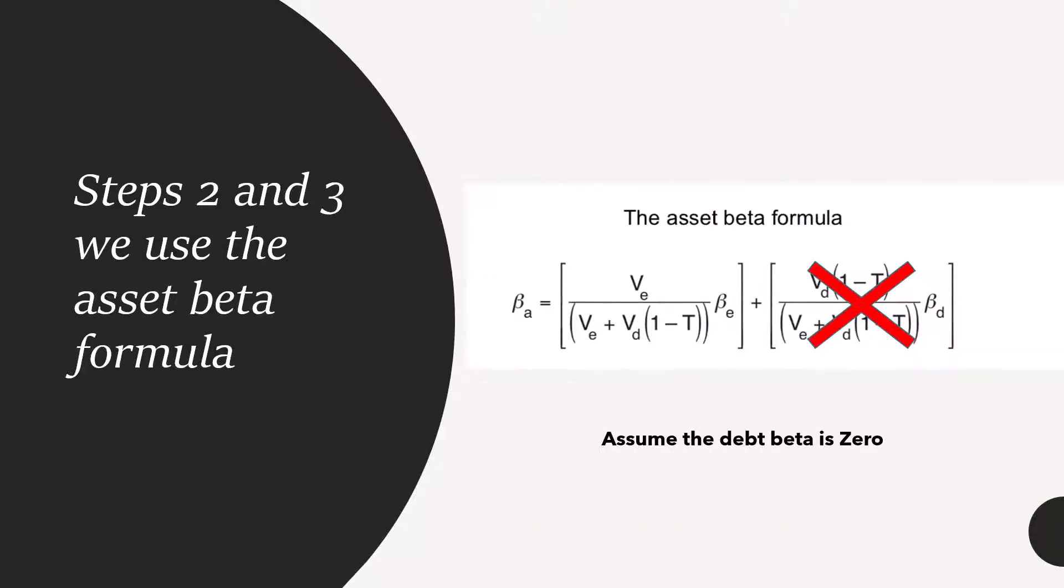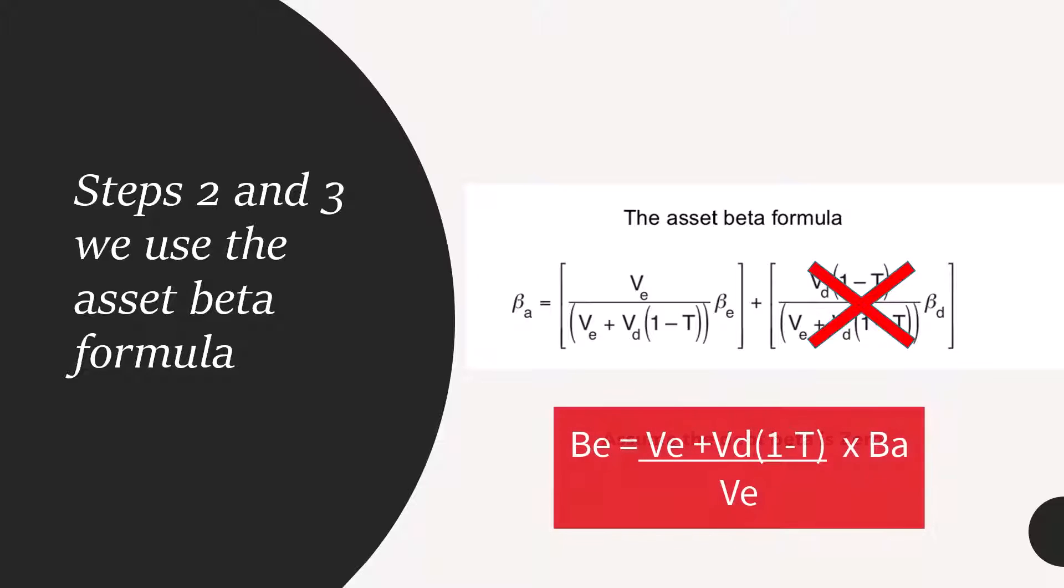For steps two and three, we are given an asset beta formula on your formula sheet. What the asset beta formula does is strips out that financial risk from the proxy equity beta. Notice we assume the debt beta is zero. This would have a marginal effect on that asset beta calculation. We then rearrange this formula to re-gear it to get back to an equity beta that we can use to calculate a specific cost of capital.